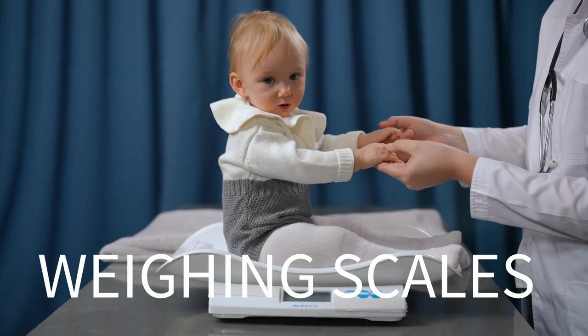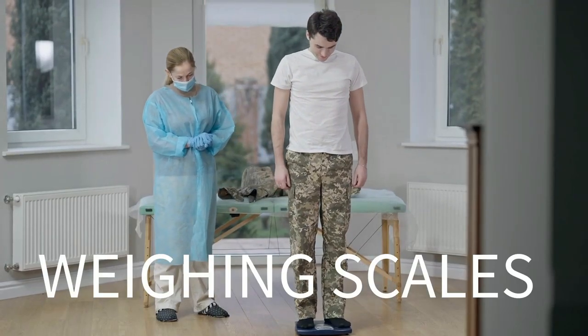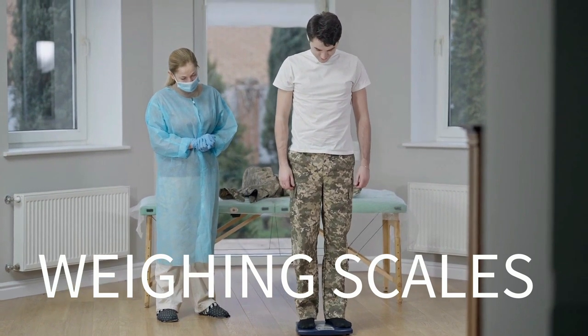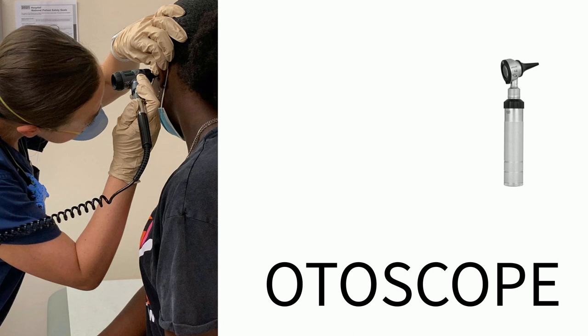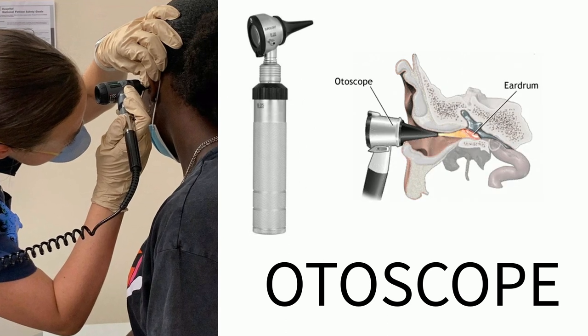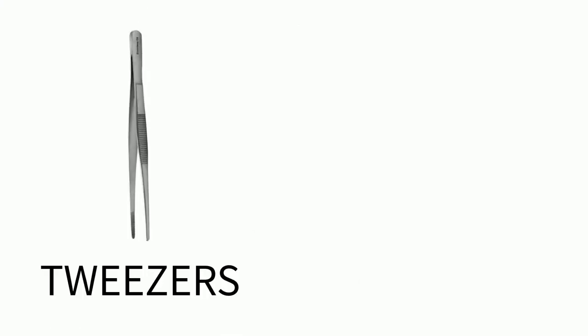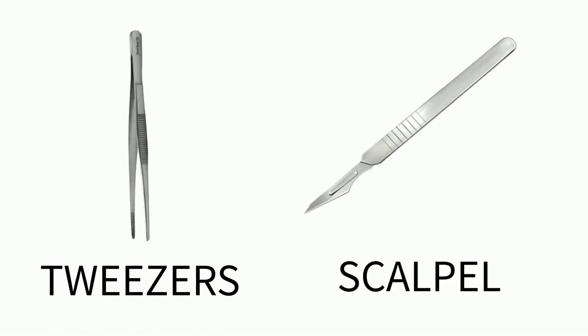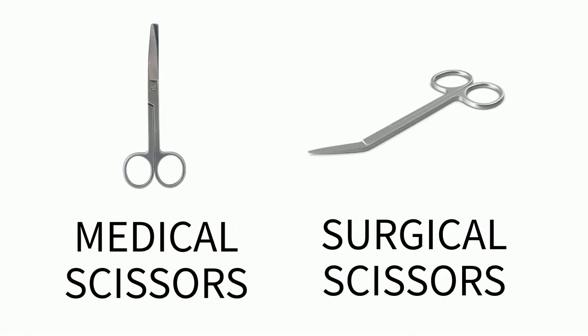To find out how heavy someone is, you would need a weighing scales. Our next device is used to look at the ear and eardrum — the otoscope. Let's move along to some more smaller tools, like the tweezers. We also have the scalpel. Next up, we have some scissors. There are lots of different types of scissors in the medical world, but generally we can refer to them as medical scissors or surgical scissors.